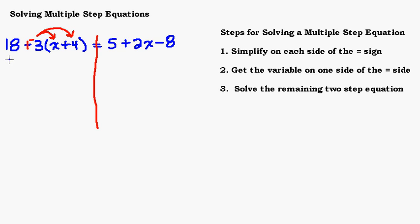So we bring down the 18, take negative 3 times x — that's negative 3x, written as minus 3x — and then negative 3 times 4 is negative 12, written as minus 12.